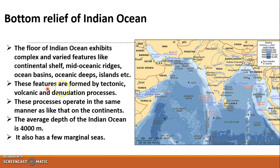These features are formed by tectonic, volcanic, and depositional processes. Earthquakes and volcanoes occur inside the ocean due to tectonic plate movement at the ocean floor, just as they do on continents. These processes operate in the same manner as on land. The average depth of the Indian Ocean is 4,000 meters, and it also has a few marginal seas.